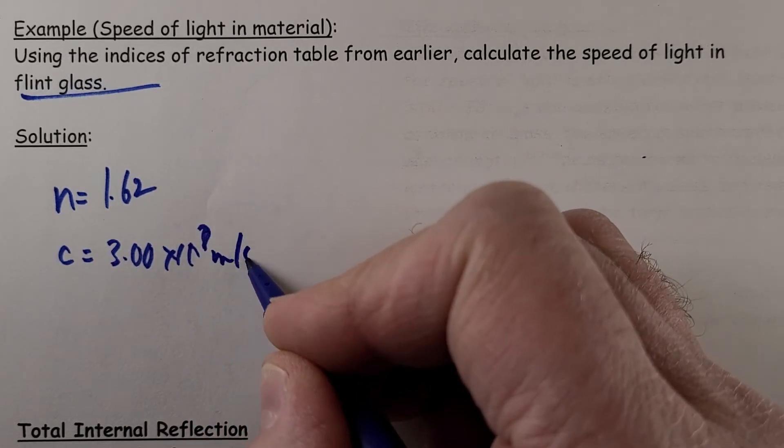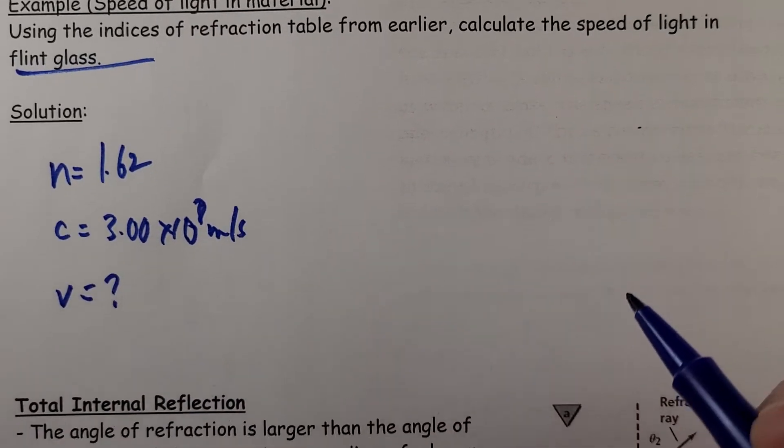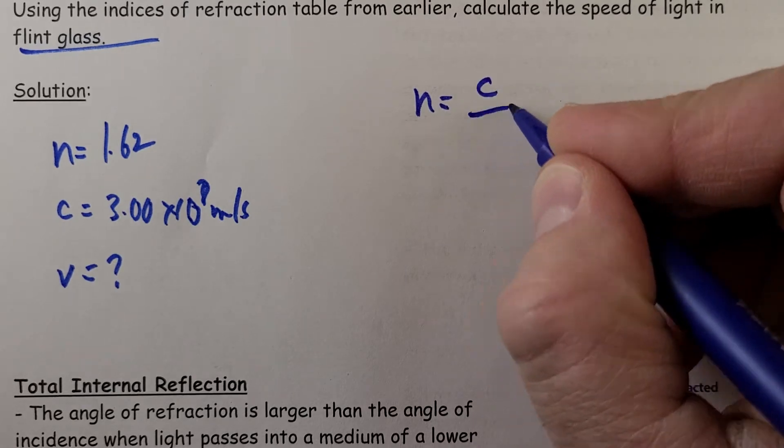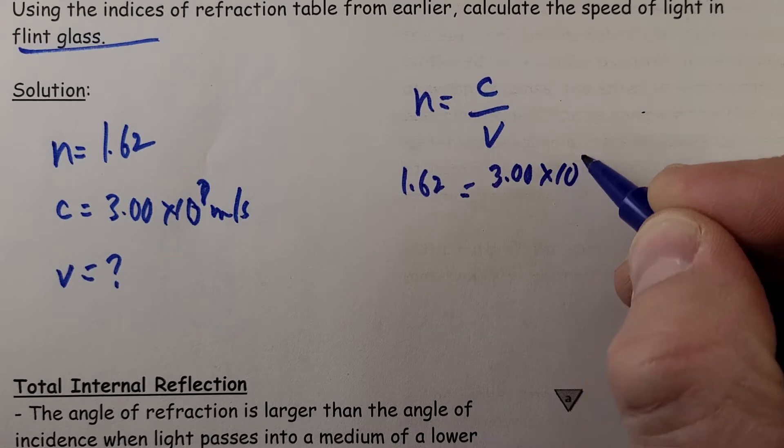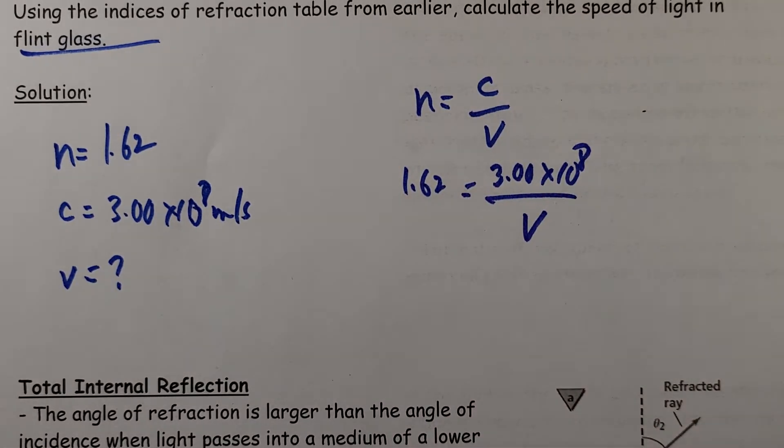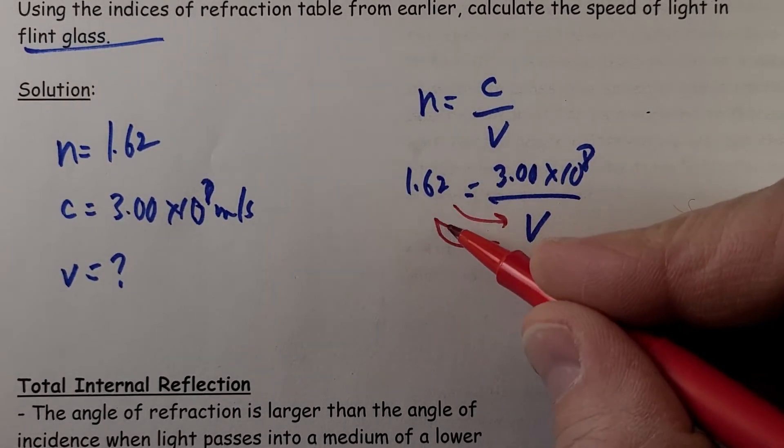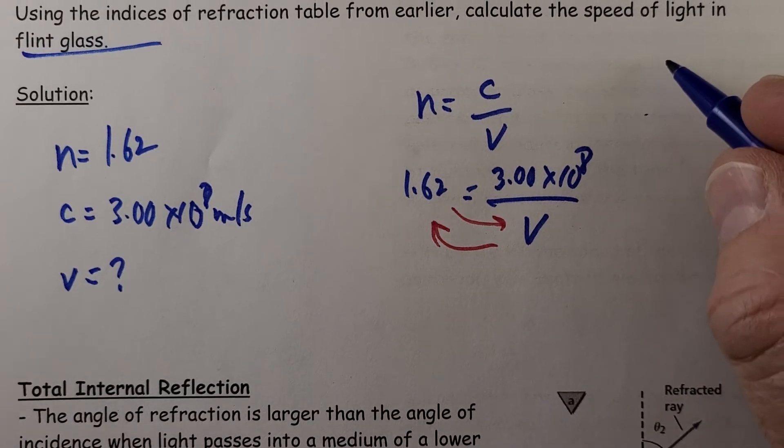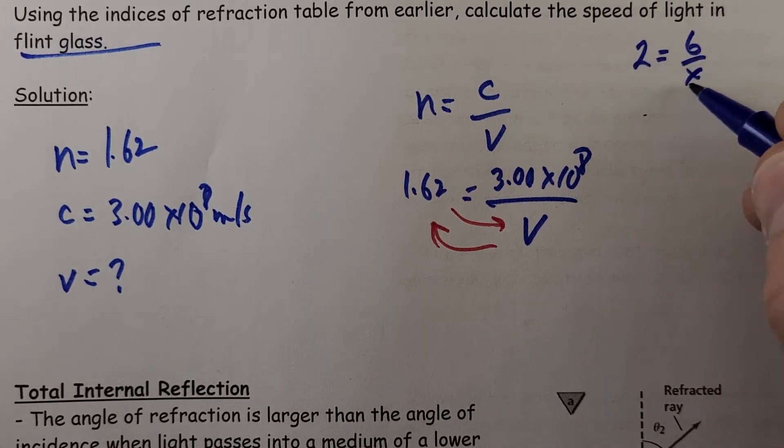If I wasn't going from air, but something else, I need to know the speed in that particular media. So N equals C over V. 1.62 equals 3.00 times 10 to the 8, and we're looking for V. Now there's a couple of different ways we can solve for this. But kind of the easiest way to do it is just simply interchange these two. If I had 2 equals 6 over X, and I was doing this the long way, multiply by X, I would have 2X equals 6, divided by 2, and X would equal 6 divided by 2.